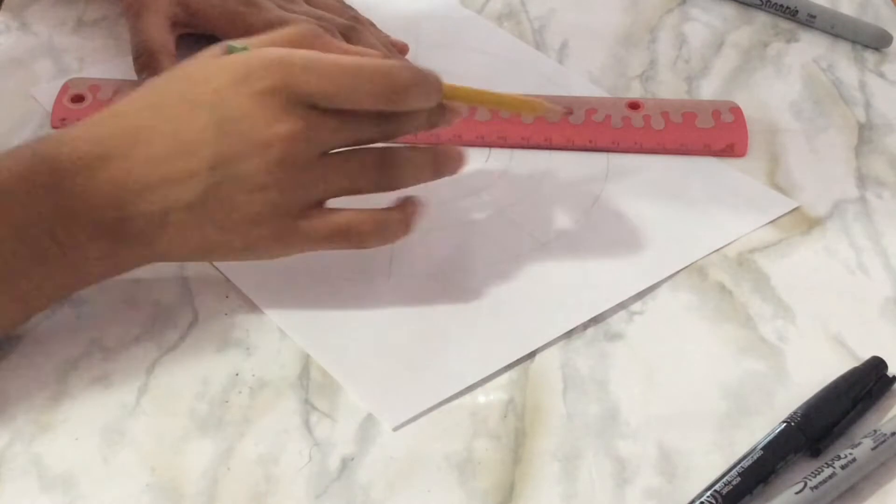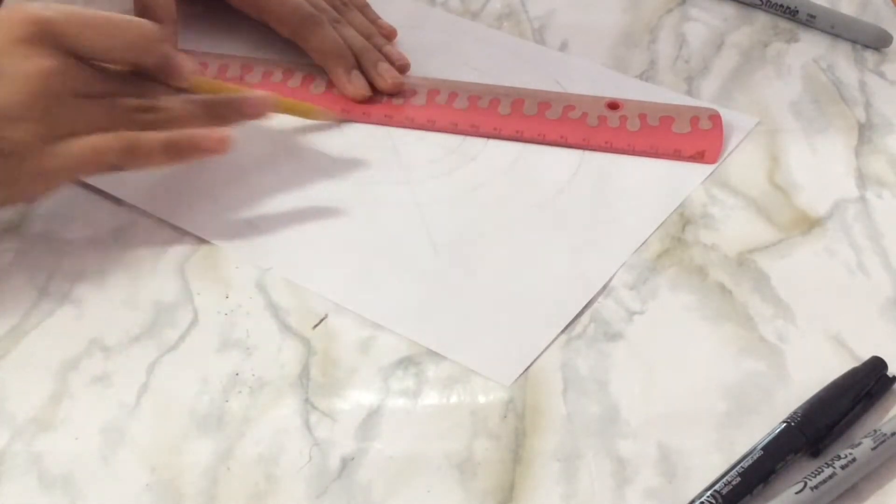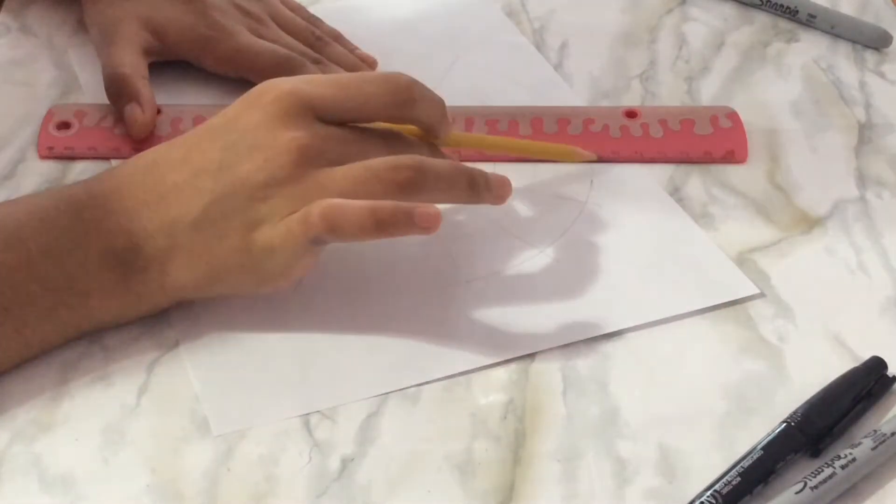After drawing your circles, divide the mandala into sections. This will help create a symmetrical design.